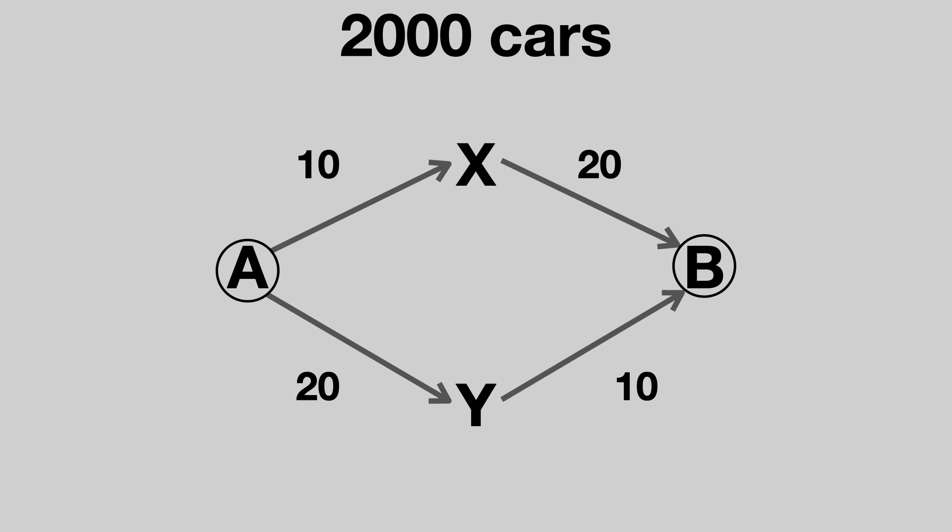Once both routes take the same amount of time, there is no longer an incentive for someone to change, because switching would only increase their journey time. This is called a Nash equilibrium, with 1,000 cars on each road. This means both routes will take 30 minutes.